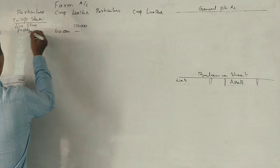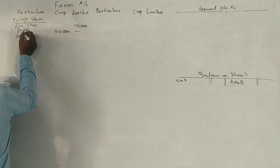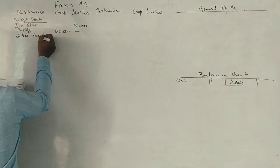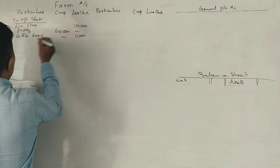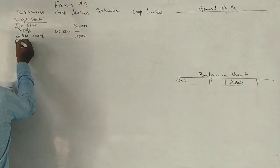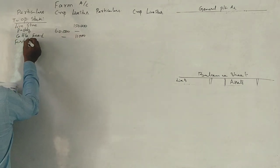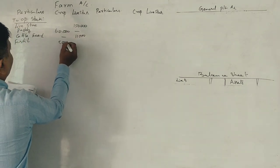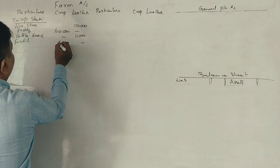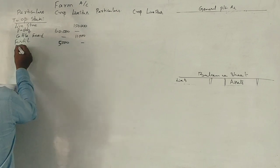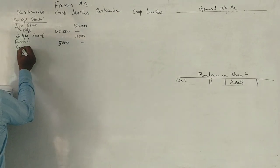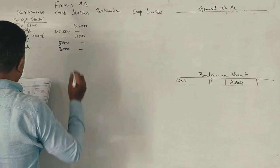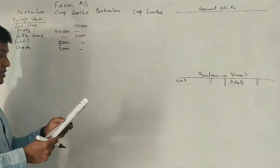Cattle feed: 11,000. Fertilizer: 5,000. Seeds: 3,000. That's it for opening stock.